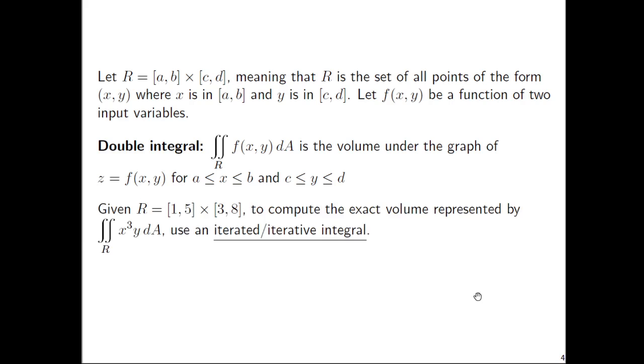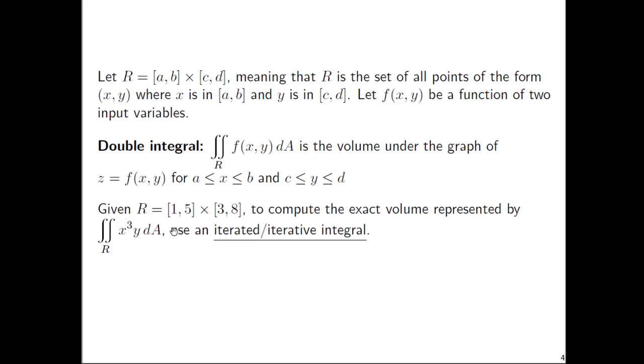We saw that it can be approximated using Riemann sums—a sum of little volumes. The individual volumes would be rectangular prisms, but we can compute exactly using an iterated integral. For instance, let's say x is from 1 to 5 and y is from 3 to 8. You'll notice the inner integral dx from 1 to 5, and then the outer integral is dy from 3 to 8.